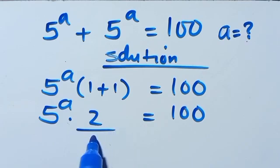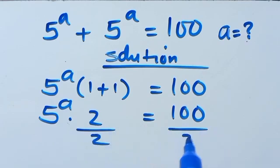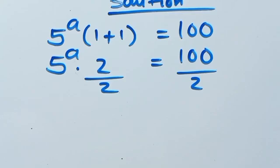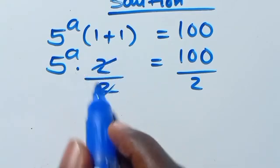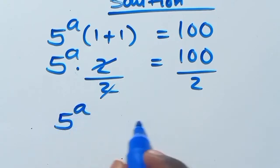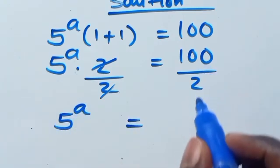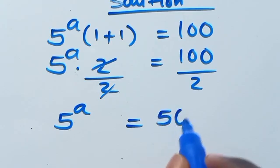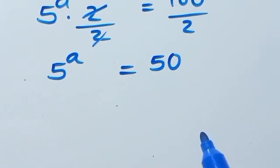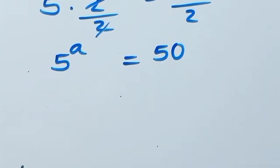Let's divide both sides by 2. The 2s cancel out, so we have 5 to the power of a equals 100 divided by 2, which gives us 50.